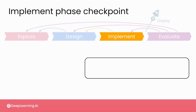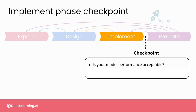At this point, before deploying your system out into the real world, there are a couple of questions that you'll need to address before moving forward. The two questions that you'd like to be able to answer in the affirmative at this stage are: is your model performance acceptable? And are the end users able to successfully interact with your system?